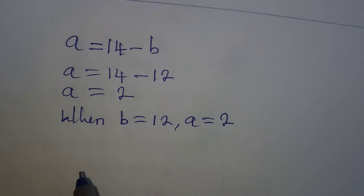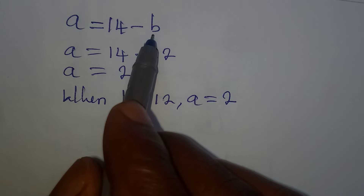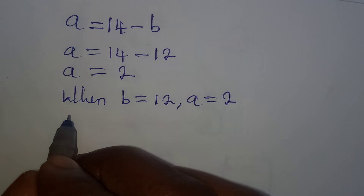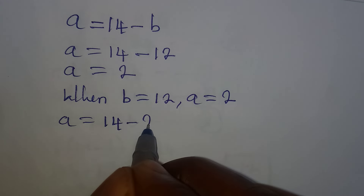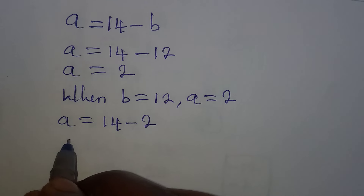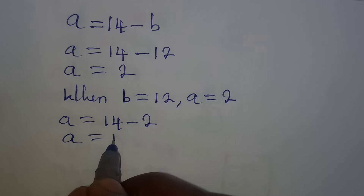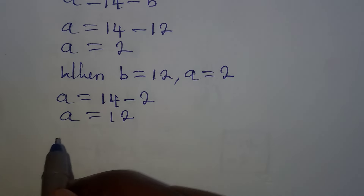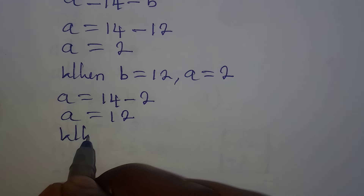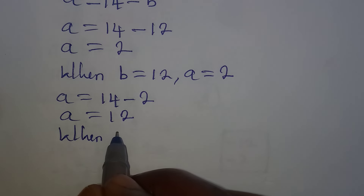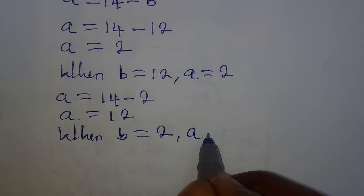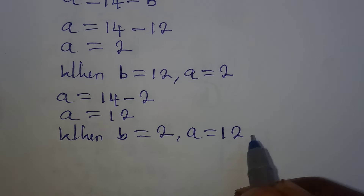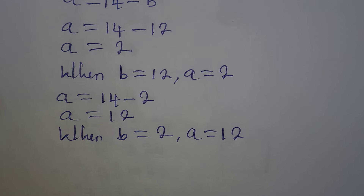Now for the second value of b, which is 2, we have a equals 14 minus 2, so a equals 12. This means when b equals 2, a equals 12.